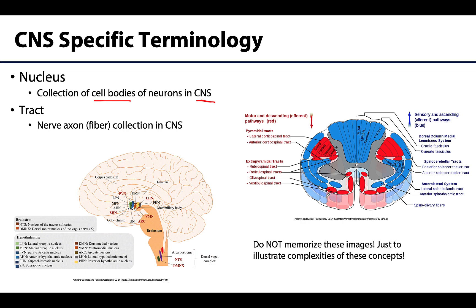Tracts are nerve axons — often referred to as nerve fiber collections — in the central nervous system. These often connect neighboring, but sometimes even distant, nuclei of the brain, or can extend up and down the spinal cord, similar to the nerves we're going to be talking about in the peripheral nervous system.